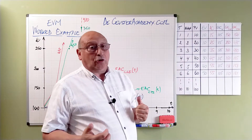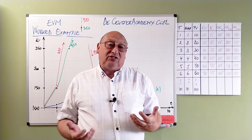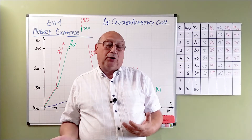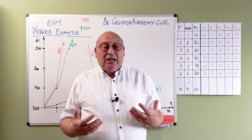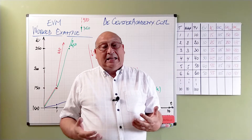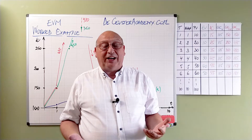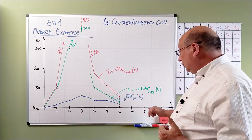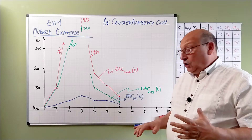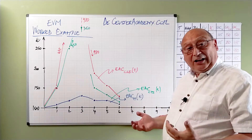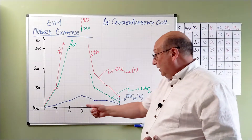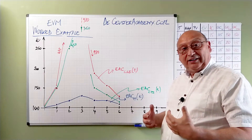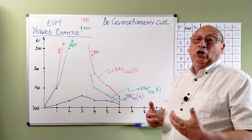For the estimate at completion with the CSI, this is what we call the pessimistic estimate. The CSI is the product of the CPI and the SPI — when both are below 1, it has an important effect on the calculations. We have all of this in a graph, where we see the mathematical estimate numbers going up a little bit then coming down again, getting closer to our original estimate.